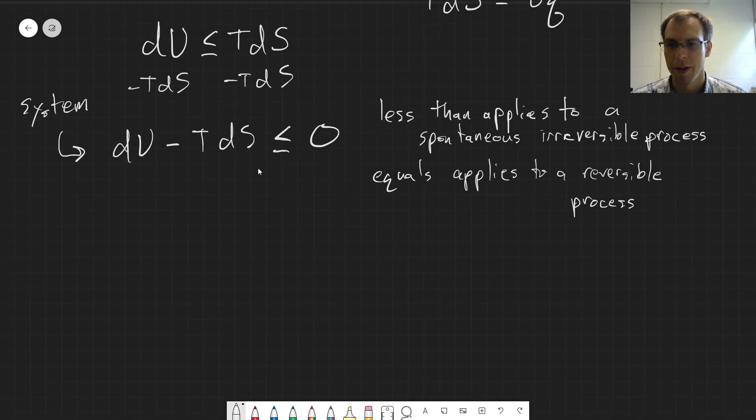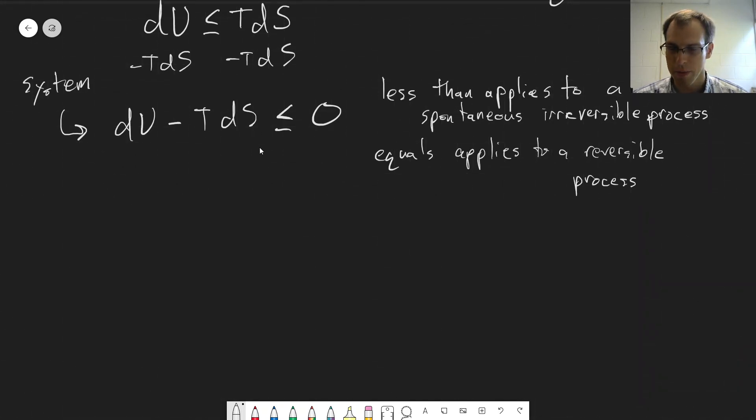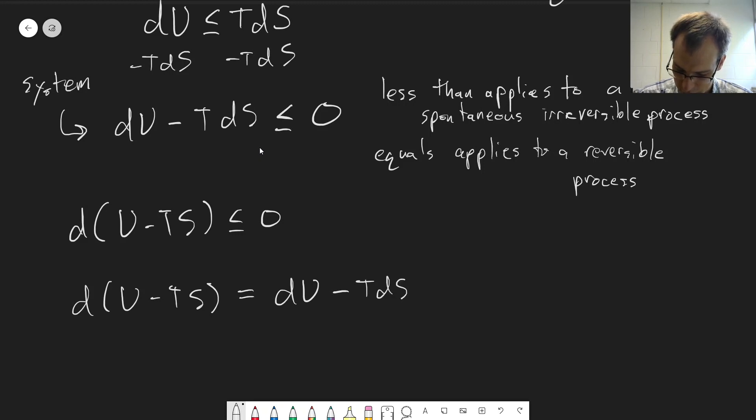So if we have constant temperature and volume, that's what we're considering here, we can write this as, we can combine things here. We can call this d(U minus TS) is less than or equal to zero, because if we take the differential of U minus TS, that's equal to dU minus TdS minus SdT, but temperature is constant, so this term is zero.